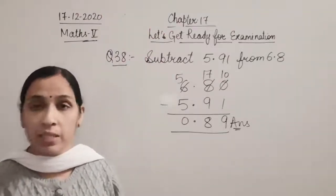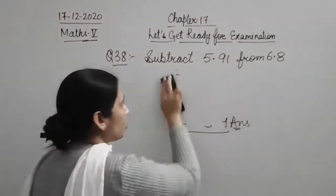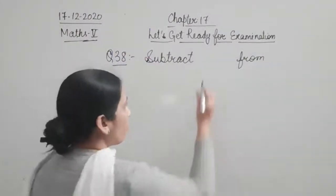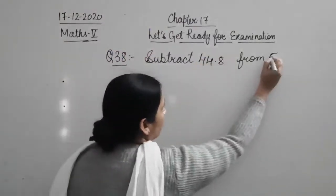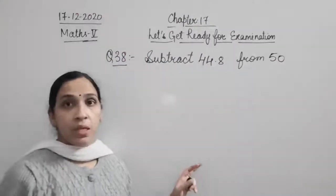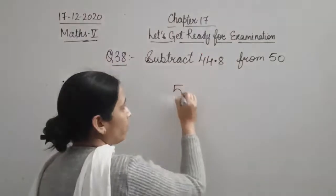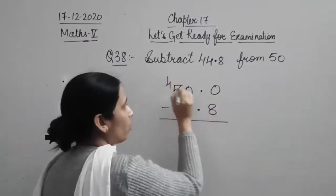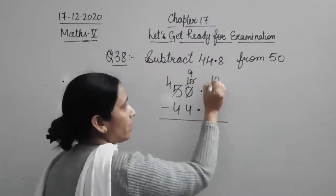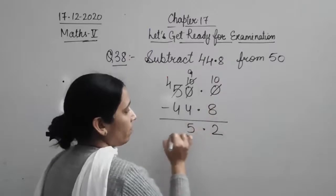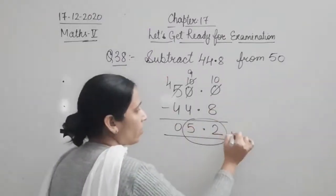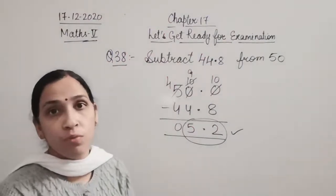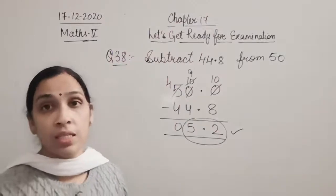Let's take one more subtraction example. If you have been given a whole number: subtract 44.8 from 50. Write 50 as 50.0 minus 44.8. Borrow: 10 minus 8 is 2, then 5 minus 4 gives 5.2. So the answer is 5.2. This shows how to handle subtraction when one number is a whole number — just add a decimal point and zero.